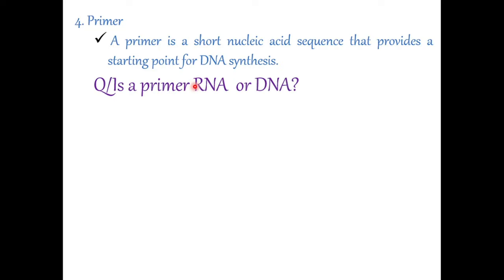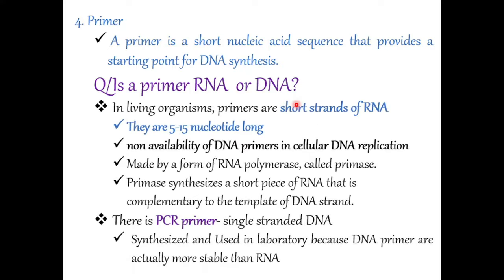The question is: is a primer RNA or DNA? In living organisms, primers are short strands of RNA, around 5 to 15 nucleotides long. They are not DNA. The reason is there are no DNA primers in natural cellular DNA replication. They are made by a form of RNA polymerase called primase.